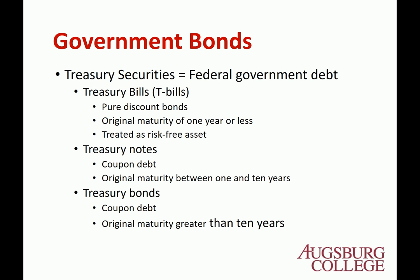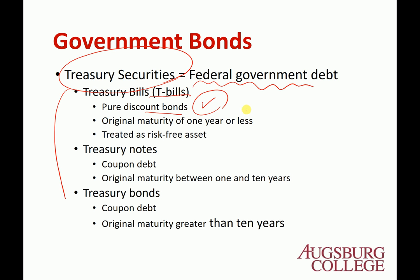Let's look at the different types of bonds. One is the government bond. There are two different governments in the United States because it is a federal system. One is from the federal government, which is called treasury securities — issued by the treasury department. Treasury securities has three different types based on maturity. The shortest one is the T-bill, or treasury bill. This is a pure discount bond, which means it doesn't pay any coupon — it's a zero coupon bond because the term is too short. The maturity is one year or less, and this is the only risk-free asset in the world.